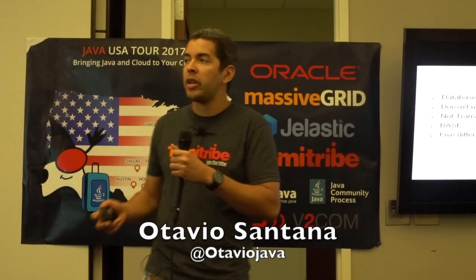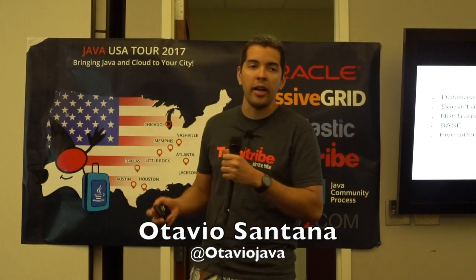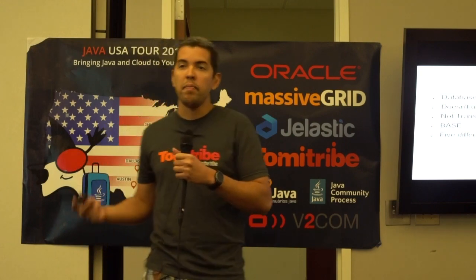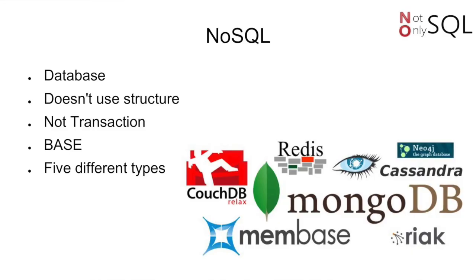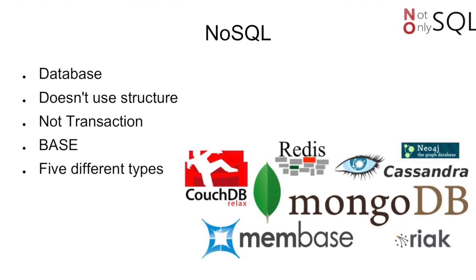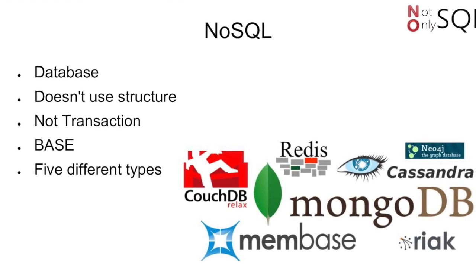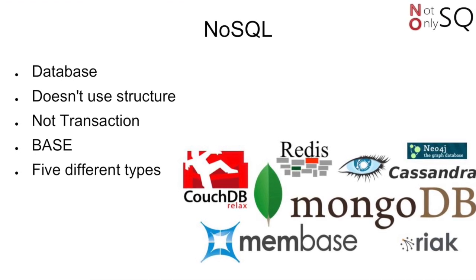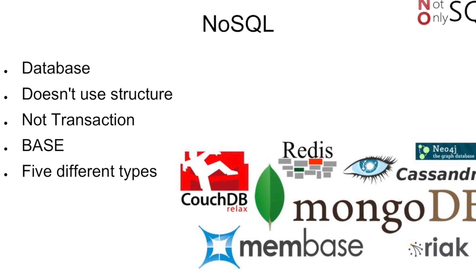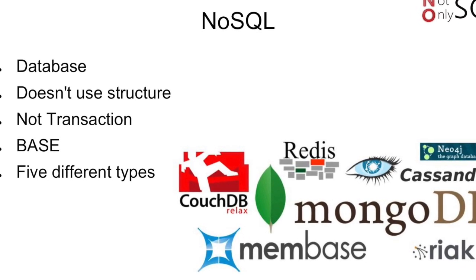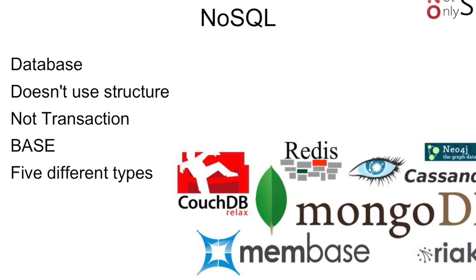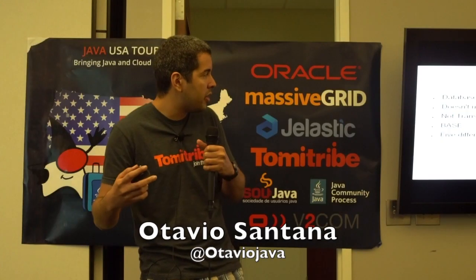Let's talk about what JNoSQL is. I need to explain more about what NoSQL means. Basically, NoSQL is a technology to store information. It does exactly what a SQL database does — I can put information there, I can retrieve information there, I can delete information there. So I can do a lot of stuff with NoSQL technology.